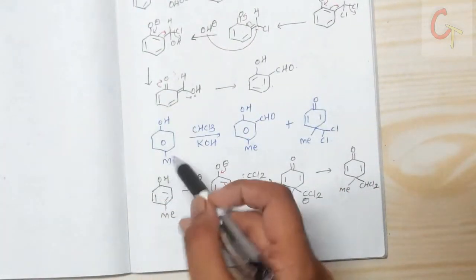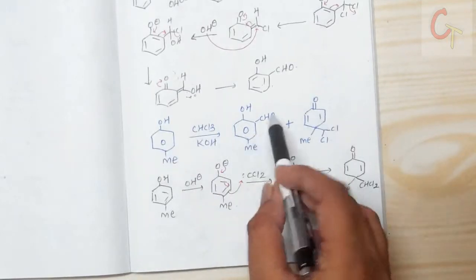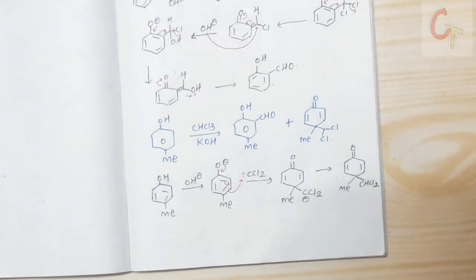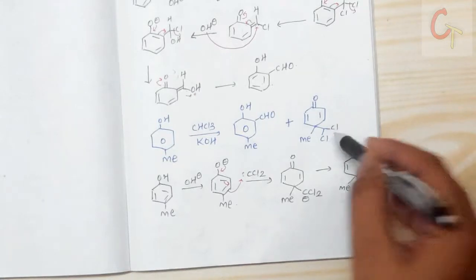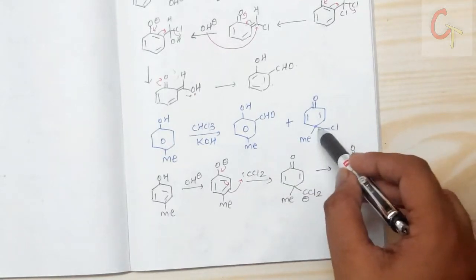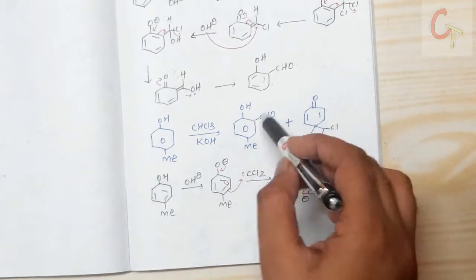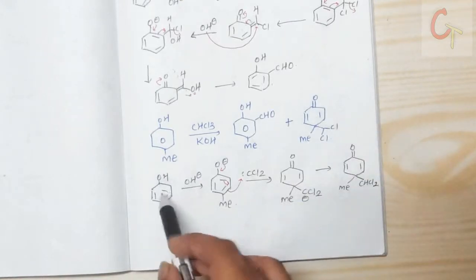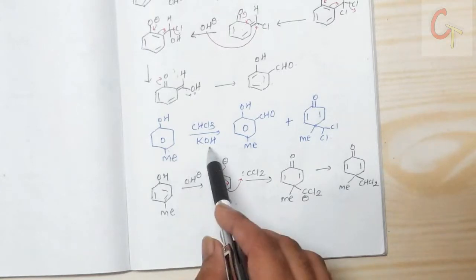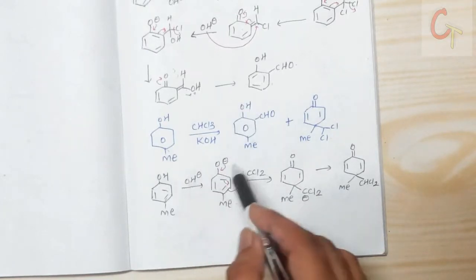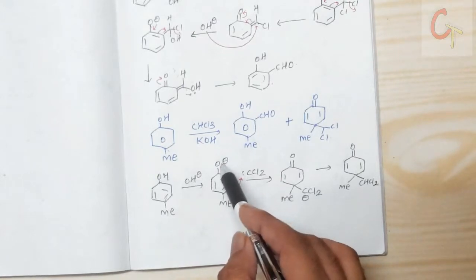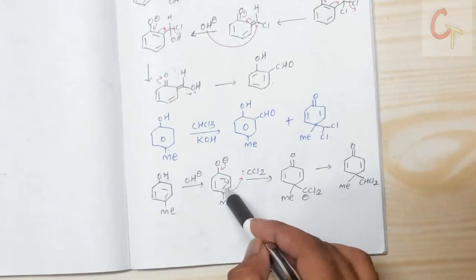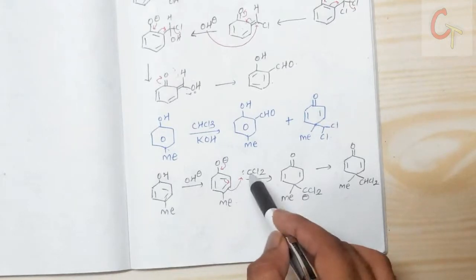When para-methyl substituted phenol reacts under the same conditions, we get the expected aldehyde substituted at the ortho position. However, there is also an unexpected product where the carbene attaches at the para position. For the ortho product the usual mechanism is followed, but for the unexpected product, the base abstracts the proton and oxygen migrates, with the double bond migrating so that the ortho carbon attacks the carbene.